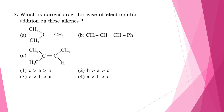Question two: which is the correct order for ease of electrophilic addition on these alkenes? Electrophilic addition will be directly proportional to the stability of the carbocation formed. In this case B will be the most stable, then A, then C. Therefore the ease of electrophilic addition will be in the order B > A > C, so the correct answer is option two.